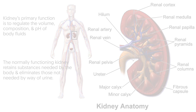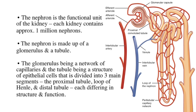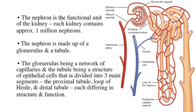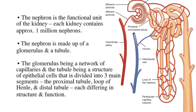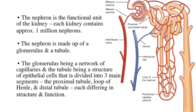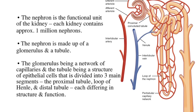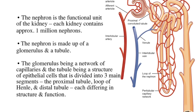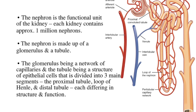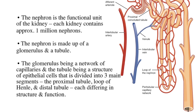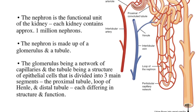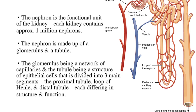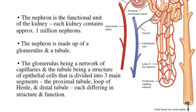The nephron is the functional unit of the kidney, and the kidney contains approximately 1 million nephrons. The nephron is made up of a glomerulus and a tubule — the glomerulus being a network of capillaries, and the tubule being a structure of epithelial cells divided into three main segments: the proximal tubule, loop of Henle, and distal tubule, each differing in structure and function.